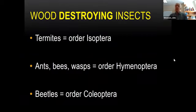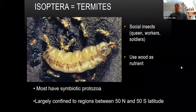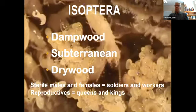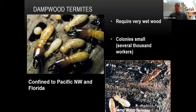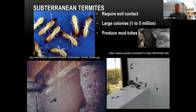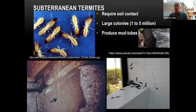We moved on to wood-destroying insects: termites, carpenter bees, and wasps. Termites are social, and there are three different kinds: dampwood, subterranean, and drywood. The dampwood termites are confined to areas where it's wet a lot, like the Pacific Northwest or Florida. The subterranean is the most common, has the largest colonies, and you diagnose them by the tubes they build to travel from the soil up to the wood substrate.